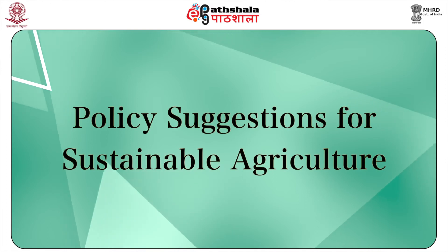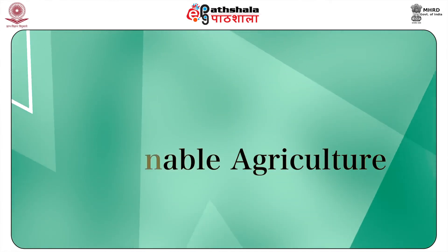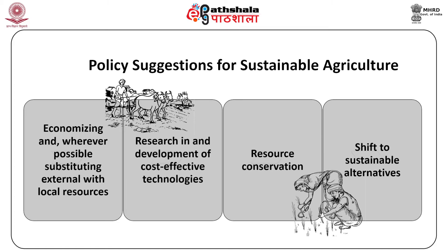We shall now understand policy suggestions for sustainable agriculture. According to Neena and Chandrasekhar, sustainable agriculture can be achieved by economizing and, where possible, substituting external with local resources. For instance, legumes in traditional crop rotations were an inexpensive source of nitrogen — a local resource — as against expensive synthetic nitrogen, the external resource. Similarly, organic manures, which are less hazardous, less expensive and labor-intensive, have been increasingly discarded with the advent of chemical fertilizers.